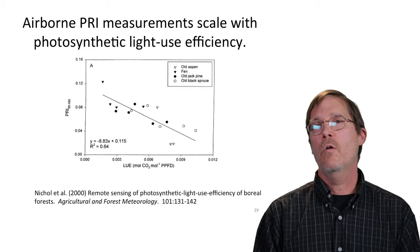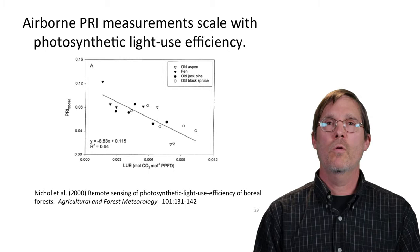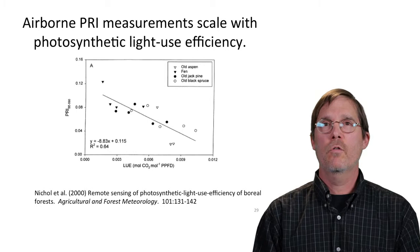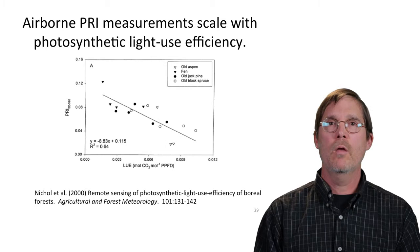There have been a number of measurements and publications looking at this. A great example is work by Carolyn Nickel and colleagues showing airborne PRI measurements of a boreal forest and relating them for several different canopies to the light use efficiency of those forests measured with eddy covariance. There is a significant relationship between PRI measured at different dates on different canopies and the light use efficiency.